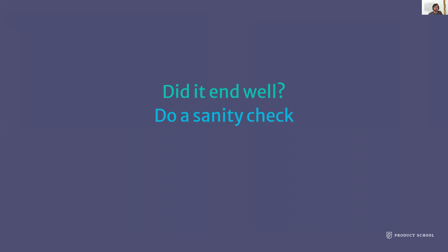To summarize: you always have to start with a problem. Data is just a tool — you have problems in the real world and data is a good way to analyze them. Find data rooted in reality. You can create sensor data, ask for feedback, interviews, questionnaires, NPS scores — but try to look for things that are actually part of the process itself, not just ratings, which may spare you from manipulations. Remember that what you measure affects people — YouTube ratings can be bought, but engagement with videos has enough genuine users watching good content for their own value, which balances things out. Always do a sanity check.